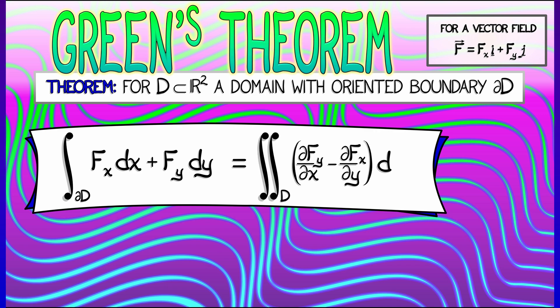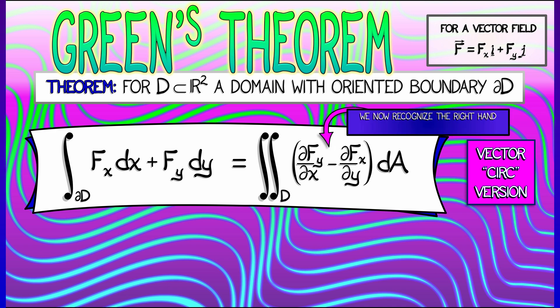then that's the double integral over the interior of partial fy partial x minus partial fx partial y. We now recognize that right-hand integrand as the curl density in 2D, as curl of F integrated with respect to area.